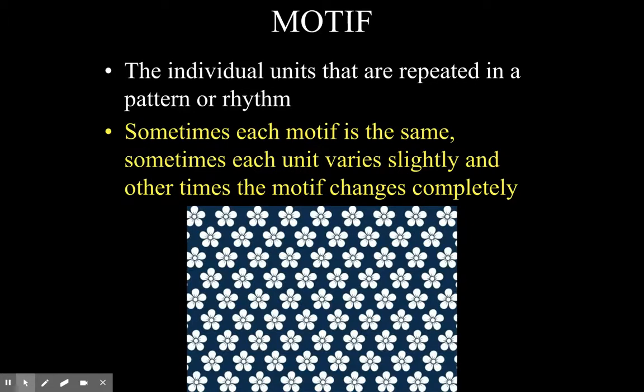These things are called motifs. A motif is the individual unit, or units, that are repeated in a pattern or a rhythm. Sometimes each motif is the same — we can see a repeated motif here where the flower is repeated. Sometimes each unit can vary slightly, and other times the motif changes completely.